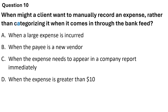Question 10. When might a client want to manually record an expense rather than categorizing it when it comes in through the bank feed? The options are: when a large expense is incurred, when the payee is a new vendor, when the expense needs to appear in a company report immediately, and when the expense is greater than 10. The correct answers are Option A — when a large expense is incurred — and Option C — when the expense needs to appear in a company report immediately.